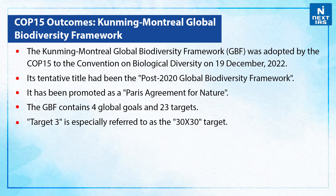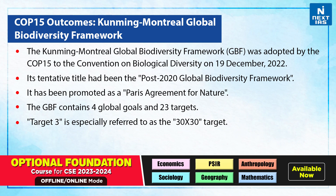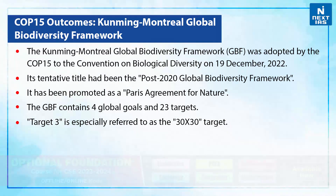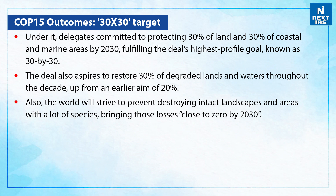The Kunming-Montreal Global Biodiversity Framework was adopted by COP 15 to the Convention on Biological Diversity on 19th December 2022. Its tentative title had been the Post-2020 Global Biodiversity Framework, and it has been promoted as a Paris Agreement for Nature. The GBF contains four global goals and 23 targets. Target 3 is especially referred to as the 30x30 target, under which delegates committed to protecting 30% of the land and 30% of coastal and marine areas by 2030.